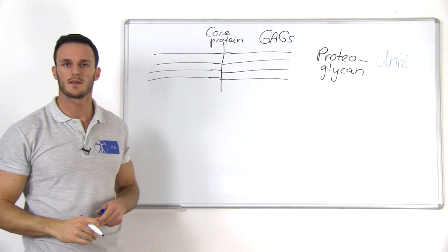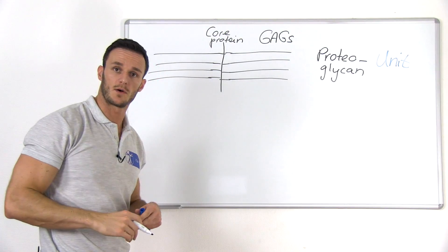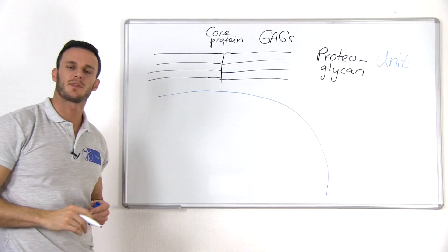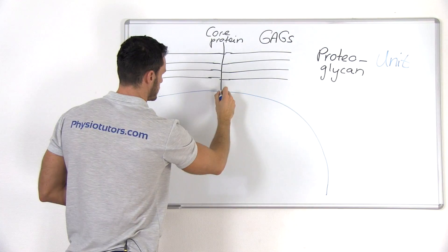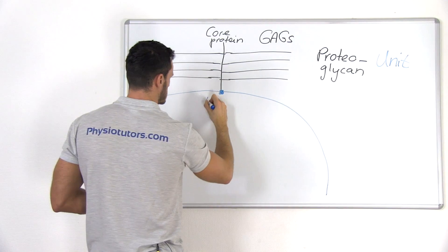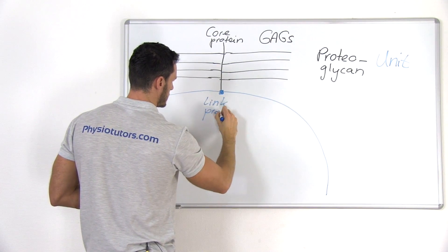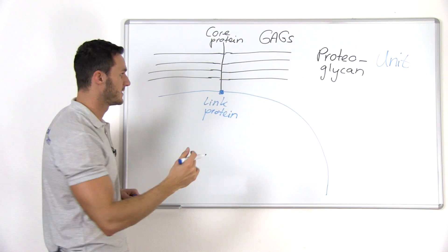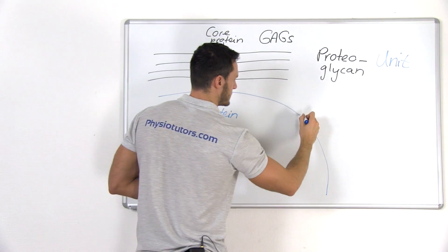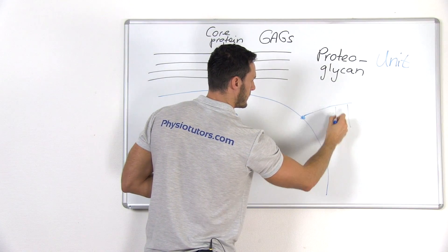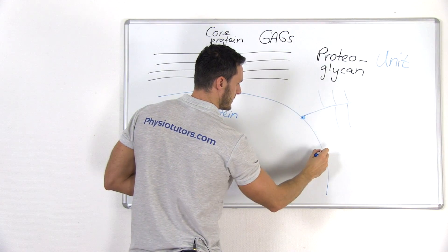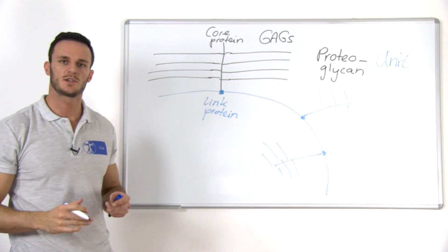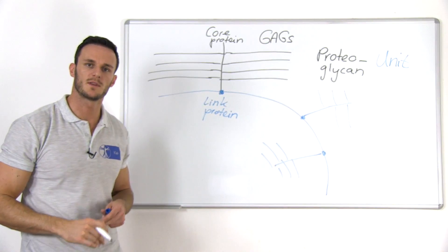A proteoglycan unit can also bind with hyaluronic acid, which is also a chain, and they bind with the help of the so-called link protein. And then you will have a lot of proteoglycan units that attach to the hyaluronic acid. And this huge new structure would be called a proteoglycan aggregate.